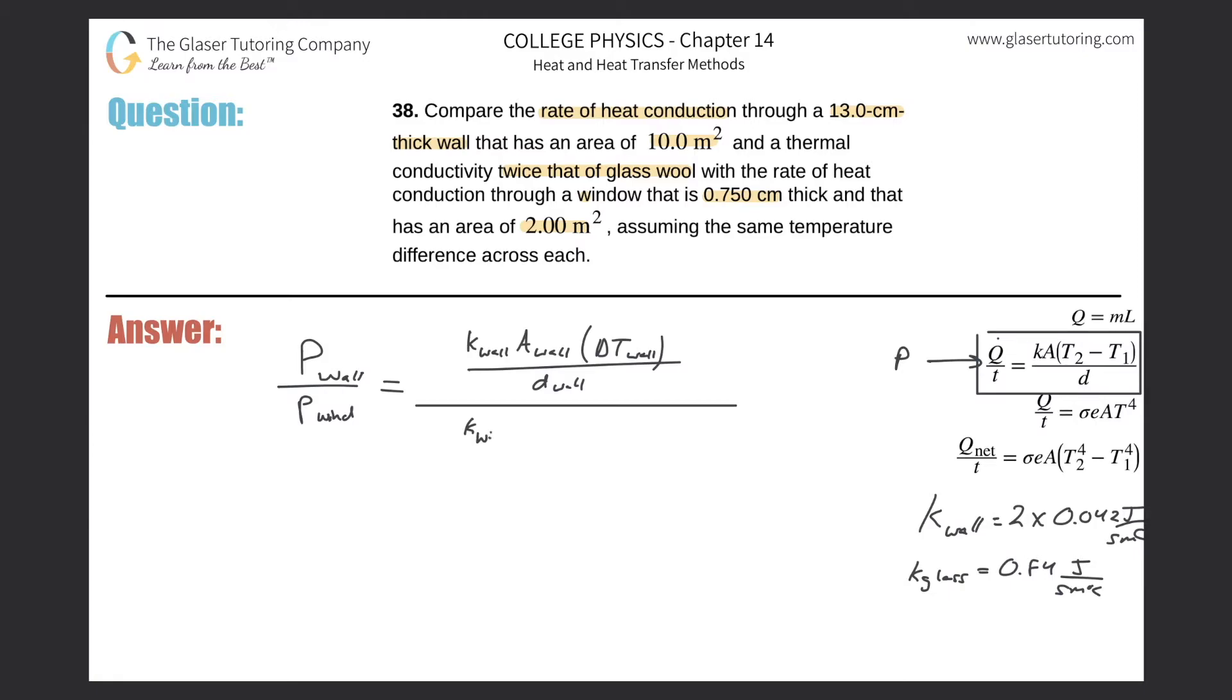We're going to divide that all now by the formula for the window, so we got the thermal conductivity constant of the window, the area of the window, the change in temperature of the window divided by the thickness of the window. Now you might be saying, well, T2 minus T1, how come you're writing delta T? Well, that's what it is, right? Change in temperature is final minus initial.